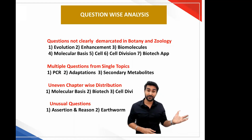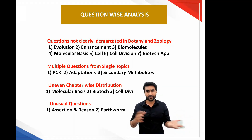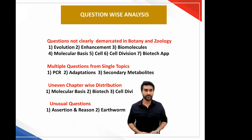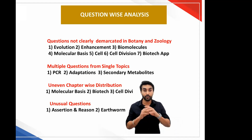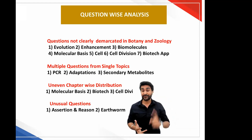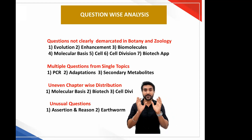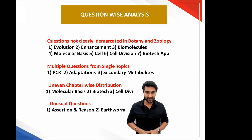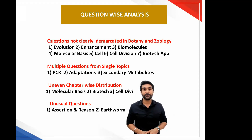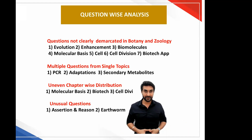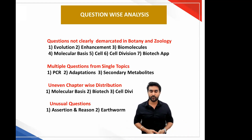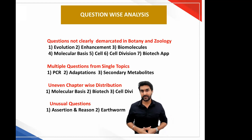Biomolecules had about two questions asked in botany and the other two asked in the zoology section. Molecular basis of inheritance was a major scatter — questions from this chapter were asked in both sections. Same for questions on cell and cell division. And if you observe the biotechnology applications chapter, questions from this chapter were asked on both the botany side as well as the zoology side. So this was the first year with a botany-zoology section in the NEET paper, but they did not do a great job in clearly demarcating the questions.